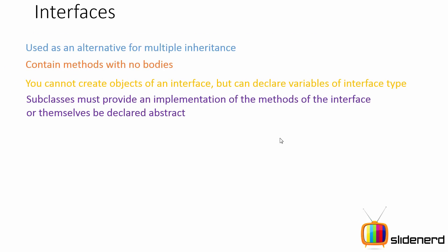Subclasses must provide an implementation of all the methods of the interface, or themselves be declared abstract. This is a contract the interface forces people to follow. In our case, Alex, Mark, and Shiva had to make the methods exactly the way the interface specified. If they had decided not to follow the contract, they would have had to make their classes abstract.